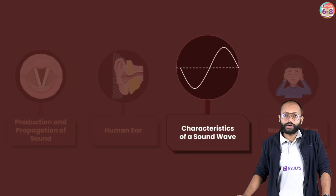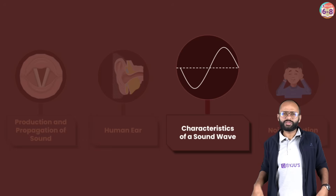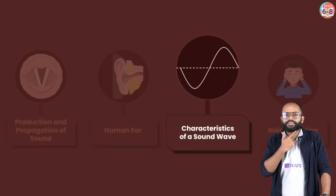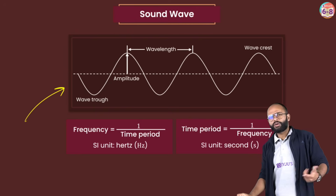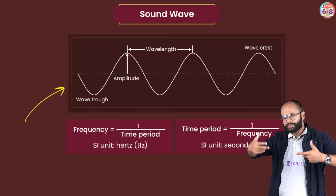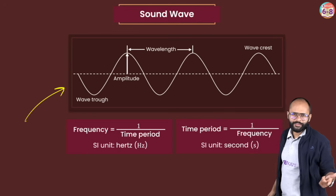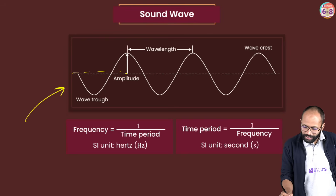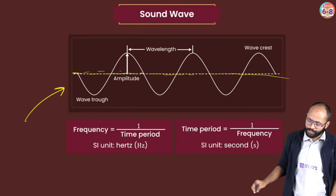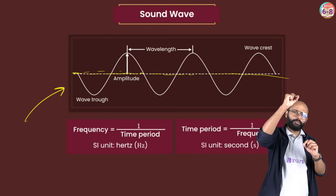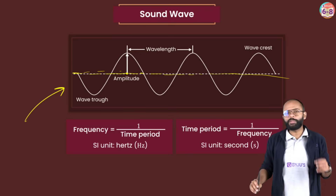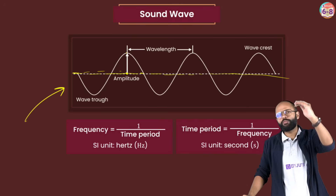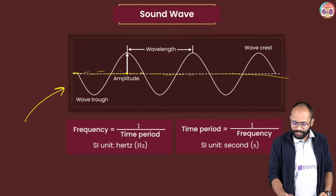Now comes characteristics of sound wave. Sound is a wave — a disturbance traveling through a medium. When we represent a sound wave, we use the typical wave diagram. The center line in the sound wave is called the mean position. The movement of a particle from the mean position to the maximum point — the highest displacement of the topmost point from the mean position — is called the amplitude.